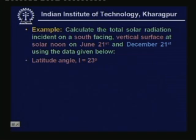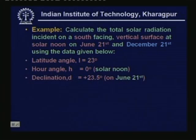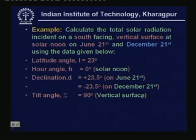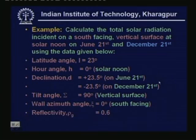The latitude angle is 23 degrees and the hour angle is 0 degrees because it is at solar noon — this is not given but must be inferred. The declination is +23.5 degrees on June 21st and -23.5 degrees on December 21st. The tilt angle is 90 degrees because it is a vertical surface, and the wall azimuth angle zeta is 0 degrees because the wall is south facing.